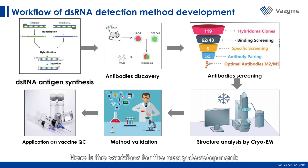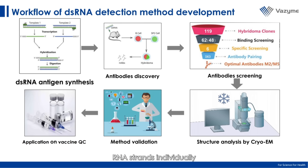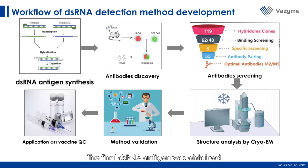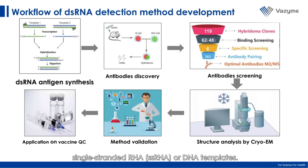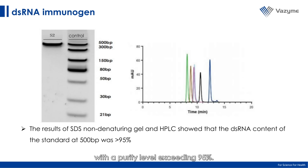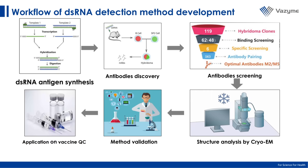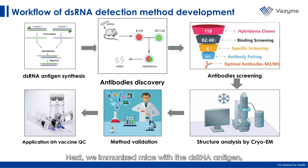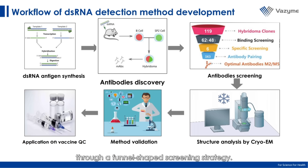Here is the workflow for the assay development. We first synthesized positive and negative RNA strands individually and then annealed them to form dsRNA. The final dsRNA antigen was obtained by adding single-strand RNase and DNase I to remove any remaining single-strand RNA or DNA templates. As a result, we achieved a final dsRNA product of 500 bp with a purity level exceeding 95%. Next, we immunized mice with the dsRNA antigen and identified lead candidates through a gel-shift screening strategy.